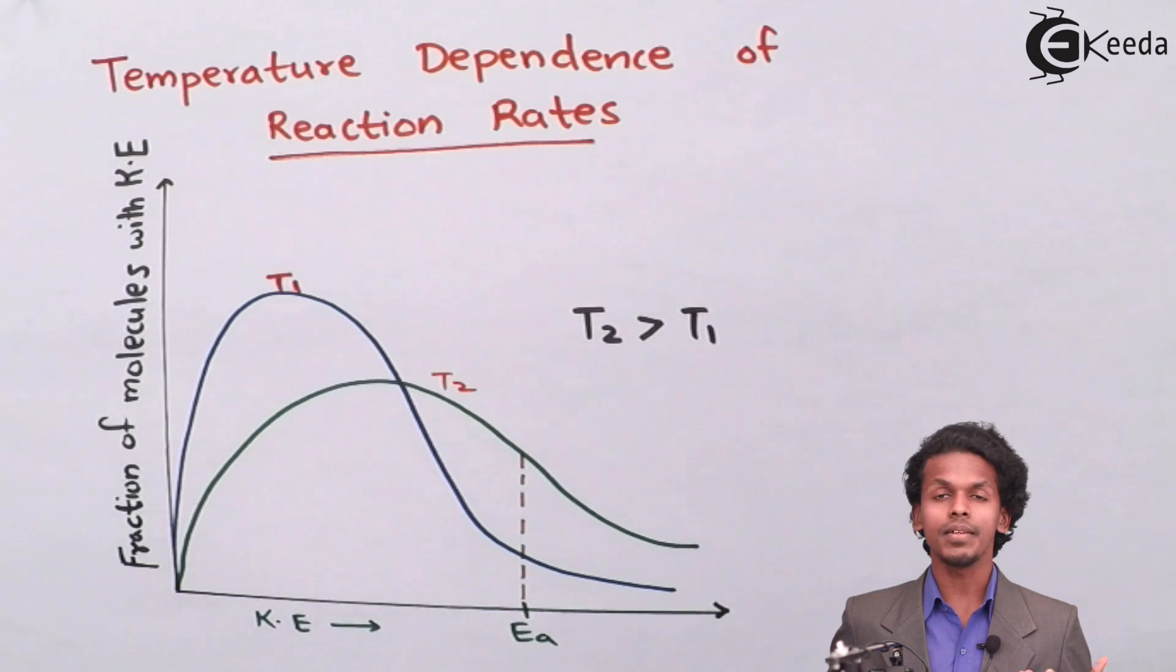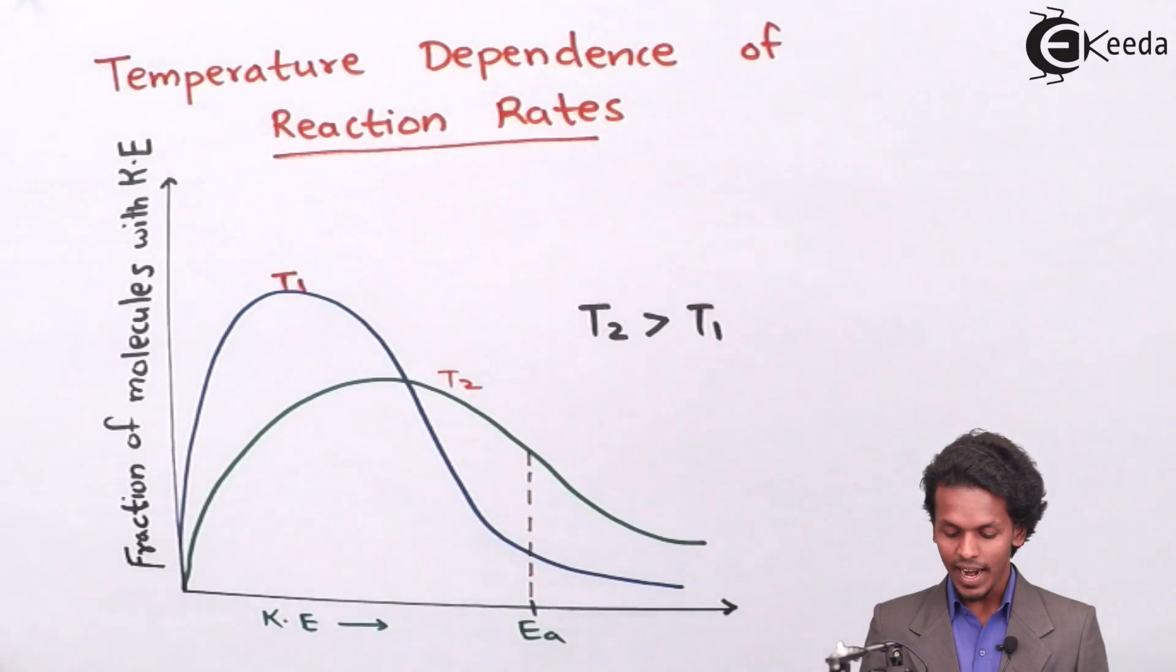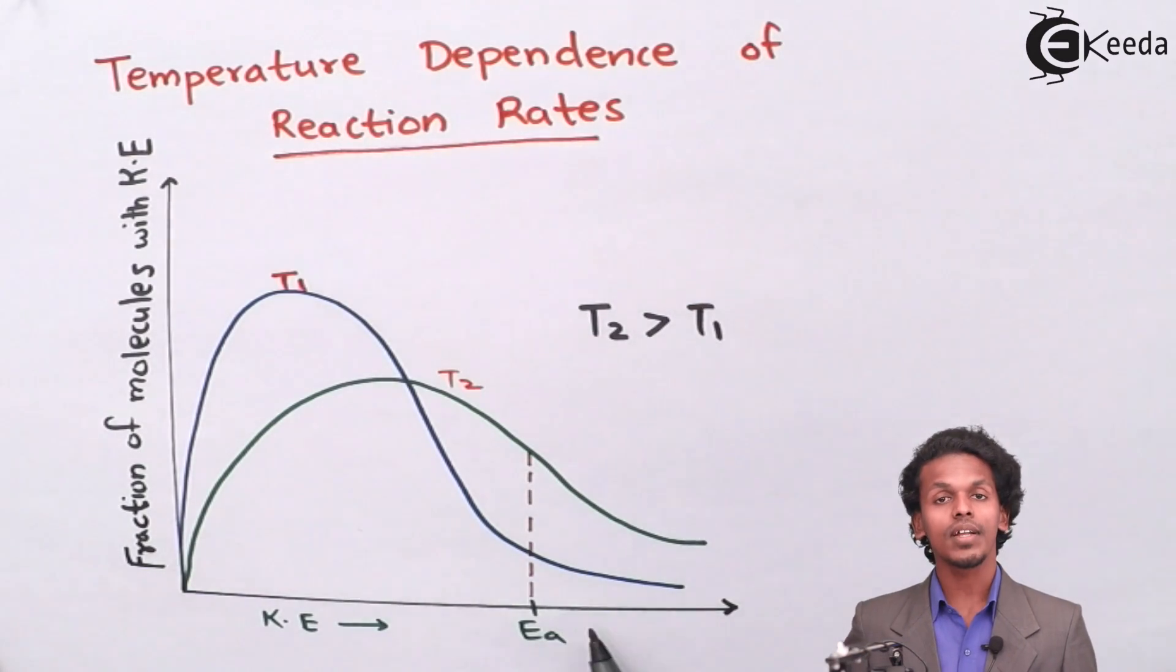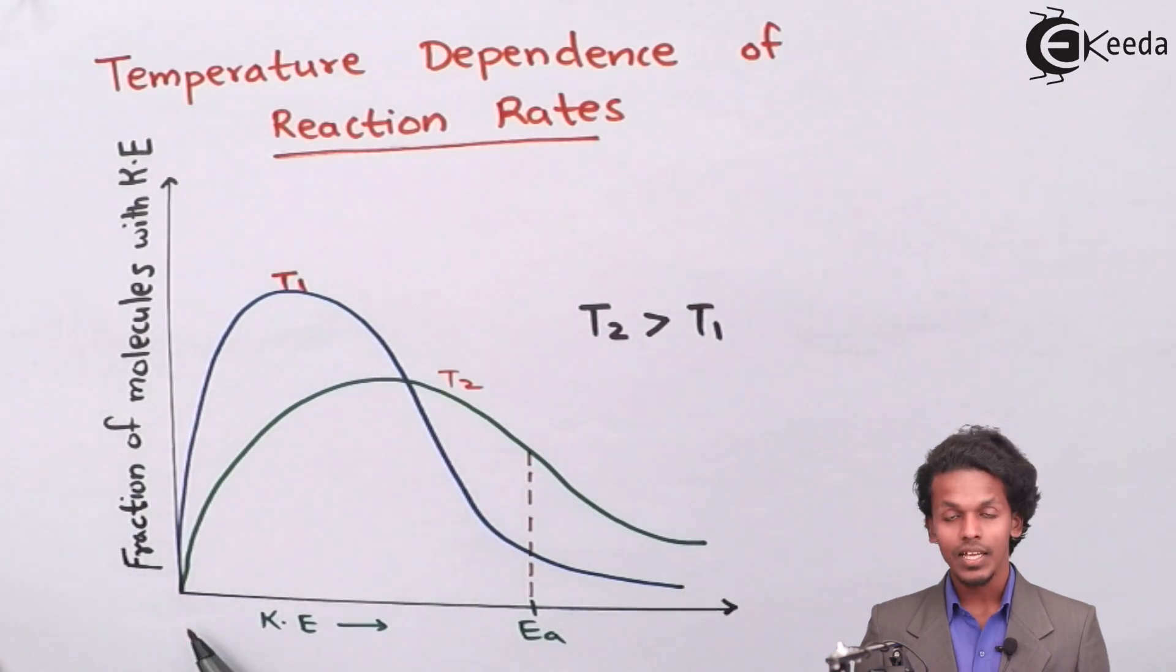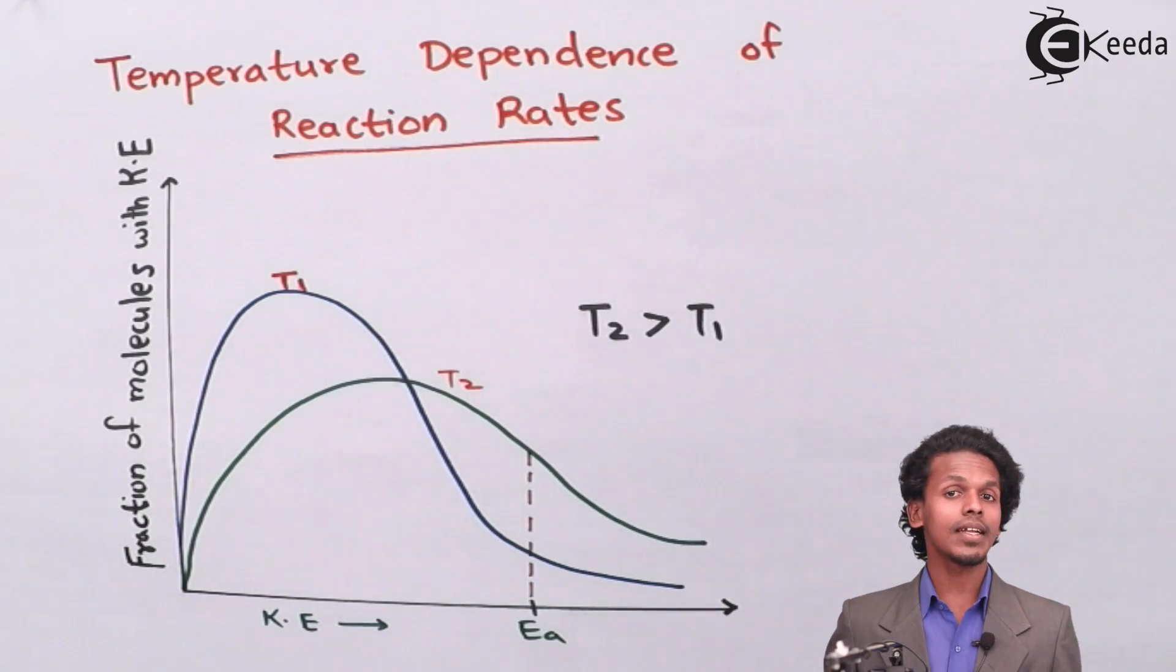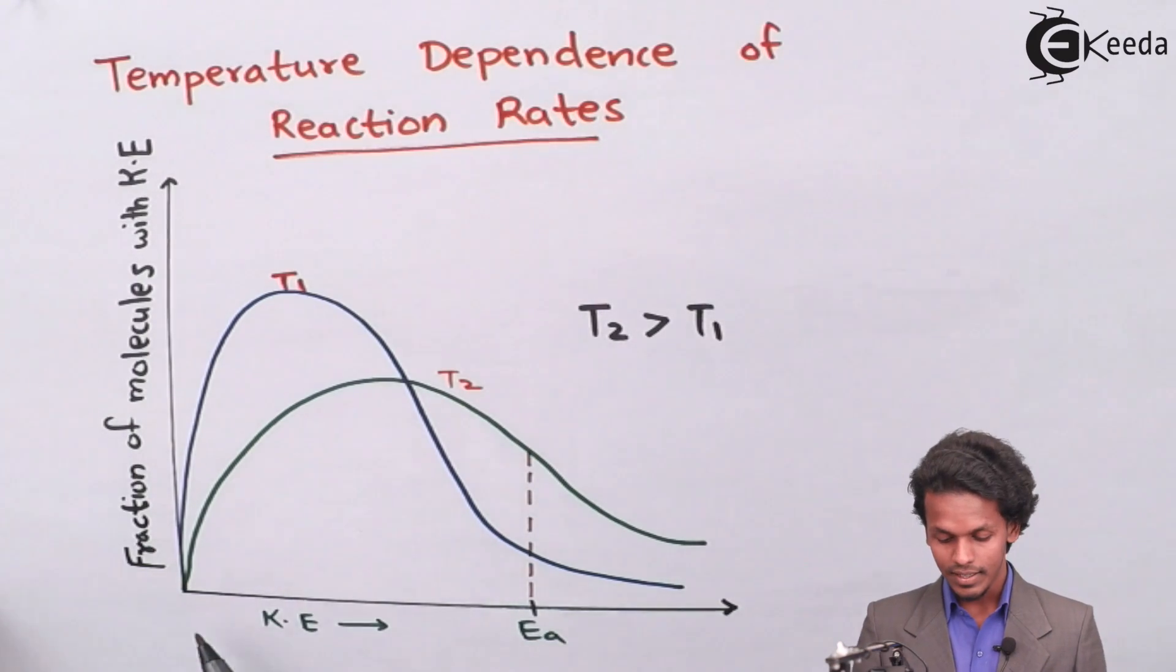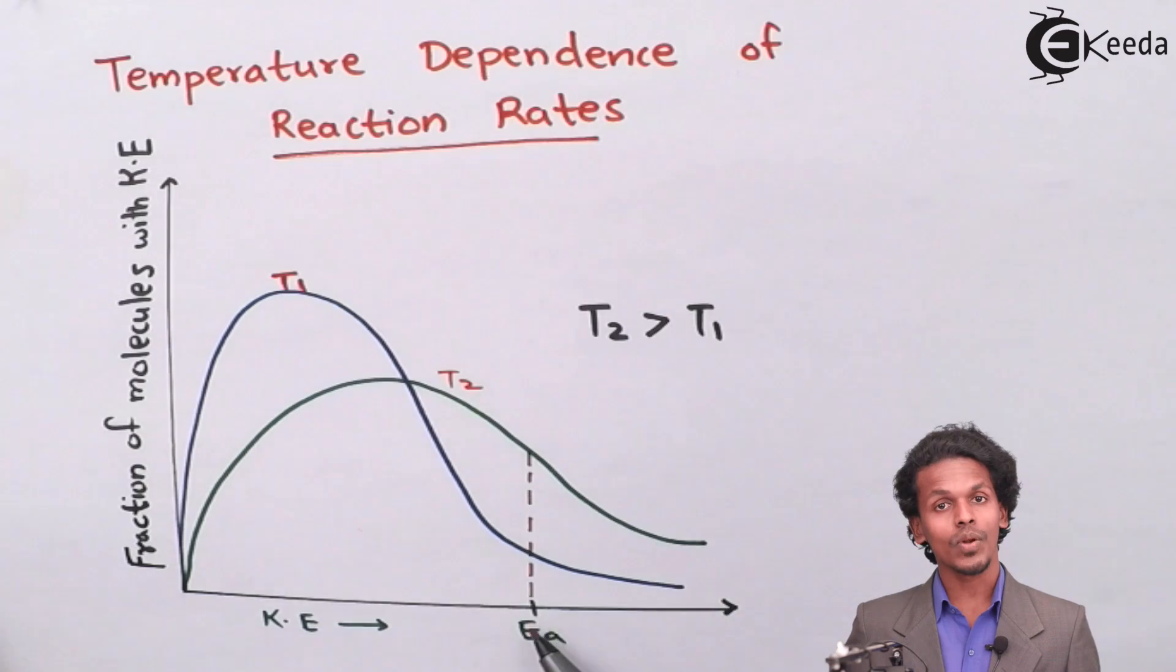As mentioned on your screen, there is a graph which denotes the fraction of molecules with a particular kinetic energy. And this is the graph for kinetic energy, or this is the axis where kinetic energy is being represented. But among that kinetic energy, there will be a part where the energy is known as activation energy.